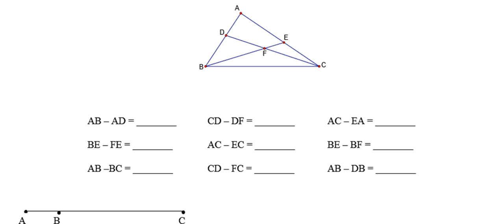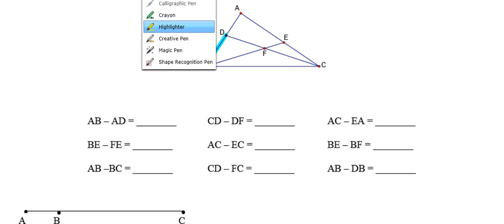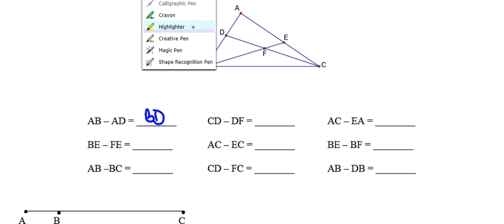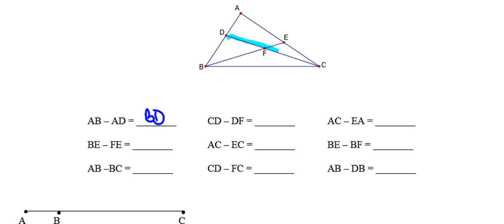Now let's move down to some subtraction problems. The first one says take the distance between points A and D, and from that subtract the distance between points A and B — we want to know what we're left with. Your answer is either D to B or B to D. The next problem: take the distance between points C and D — that's the entire line segment — and subtract the distance between points D and F. What are we left with? The distance between points F and C.